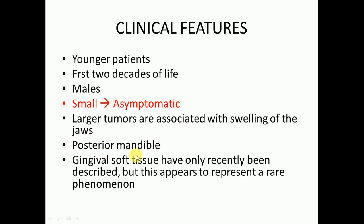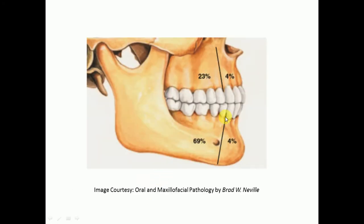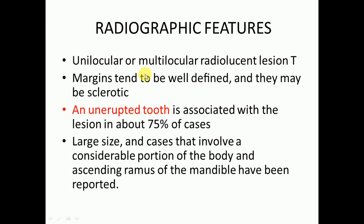The posterior mandible is more commonly involved. There is another variant — an extra-osseous variant of ameloblastic fibroma involving gingival soft tissue — which has only recently been described and appears to represent a rare phenomenon.